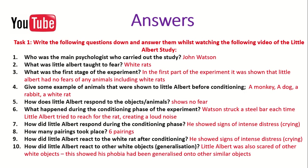Question two: what was Little Albert taught to fear? Obviously it was white rats. The first stage of the experiment demonstrated that Little Albert had no fears of any animals, including white rats — different animals were shown to him beforehand and he showed no signs of fear or distress. The animals used at the start of the experiment were a monkey, a dog, a rabbit, and a white rat. Question five: how did Little Albert respond to the objects or animals? Before conditioning, he showed no fear or distress.